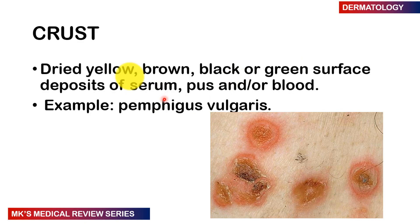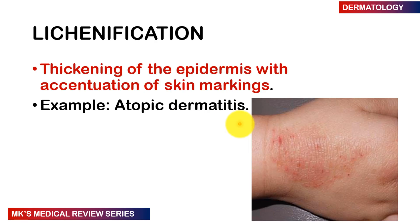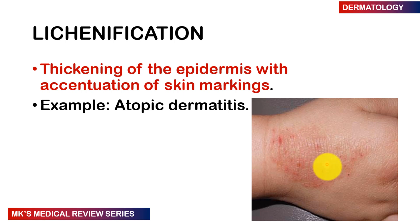Crusts are dried yellow, brown, sometimes black or green surface deposits of serum, pus, and old blood. This is seen in conditions such as pemphigus vulgaris. Lichenification is thickening of the epidermis with accentuation of skin markings — the lines appear much more prominent. It is often the result of excessive rubbing or scratching, and is seen in atopic dermatitis.